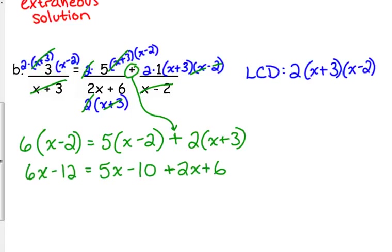You've got to combine the like terms on the right side before you start moving things from side to side. So we have 7x minus 4, and then we get x is equal to negative 8.